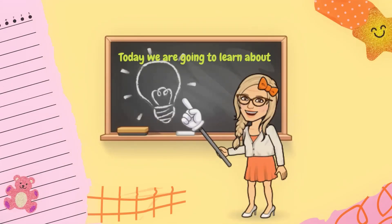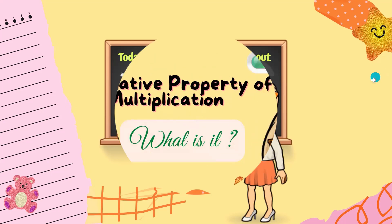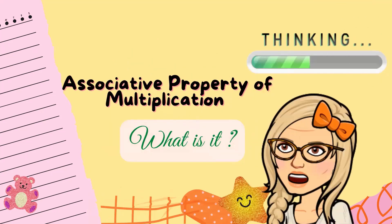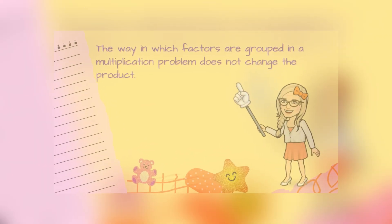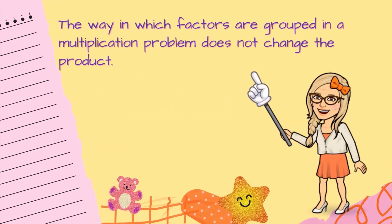Today we're going to continue working with multiplication. This lesson will be about the associative property of multiplication. The associative property of multiplication states that the way in which factors are grouped does not affect — does not change — the product.